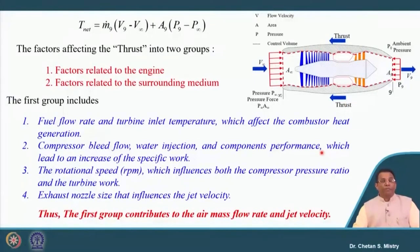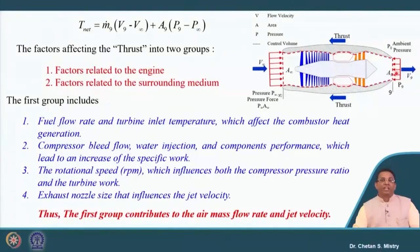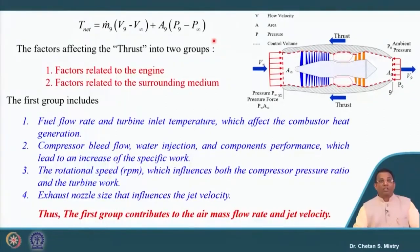Now let us move towards what we need to understand — our requirements. Here, if we look at a turbojet engine, we have upstream conditions where the free stream mass flow rate is m-infinity and velocity is v-infinity. At the exit we have exit velocity v9, static pressure p9, and exit area a9. That component we defined as a nozzle. Based on that, in early lectures we derived the equation: net thrust equals m-dot-9 times v9 minus v-infinity, plus a9 times (p9 minus p-infinity). We discussed momentum thrust, momentum drag, and pressure drag.